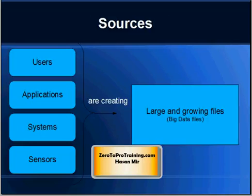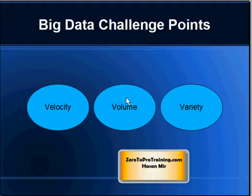Where is this data coming from? It is coming from users like you and me, applications like Facebook, systems like ticketing systems, and sensors like those in factories. All these things, plus many others, are creating Big Data — in other words, large and growing files. The keyword behind Hadoop is Big Data, and Big Data is creating challenges that Hadoop is addressing.